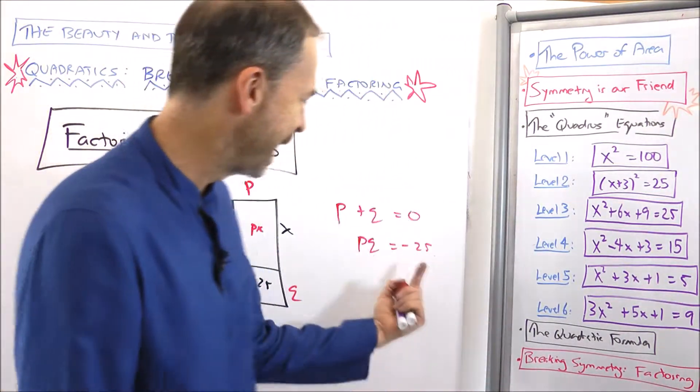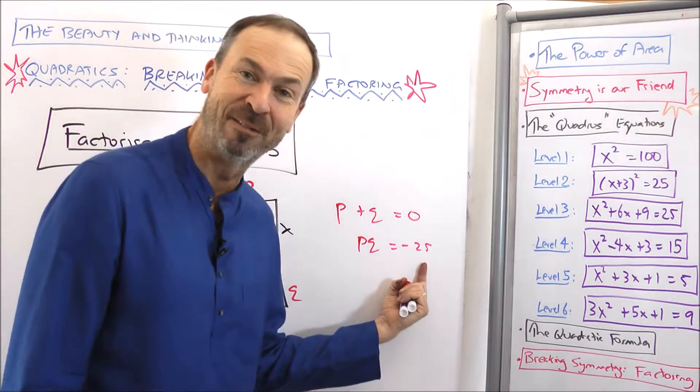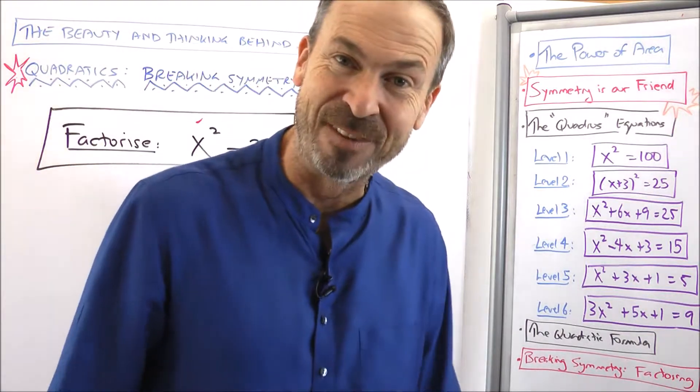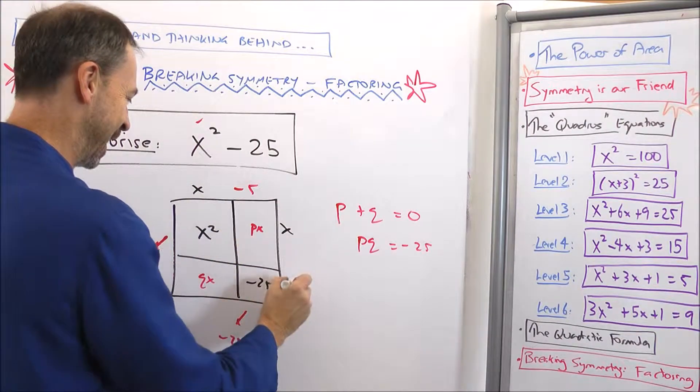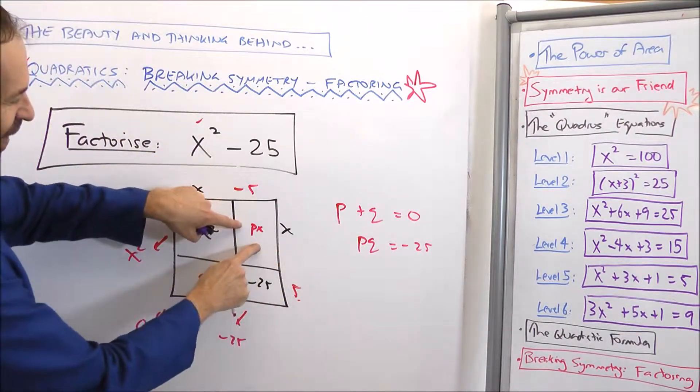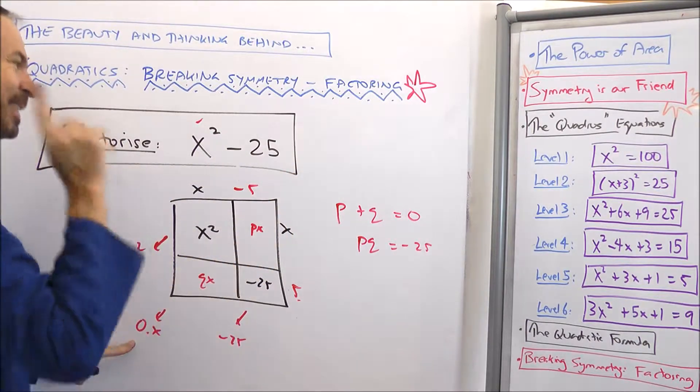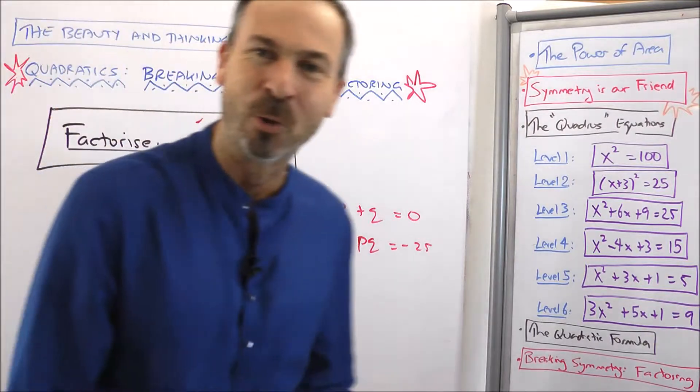Well 25 is a square number. It's 5 times 5. So if I want negative 25, I could do negative 5 times 5 is negative 25. And negative 5 plus 5 is indeed 0. Negative 5 and 5 are looking good. So let's try it. Negative 5 and 5. What will I get? Negative 5x. Positive 5x. Negative 5x and positive 5x makes no x's. Yes. Negative 5 times 5 is negative 25. And all is golden.